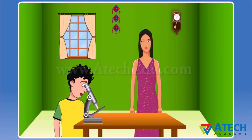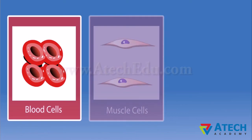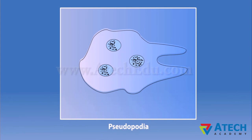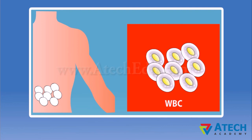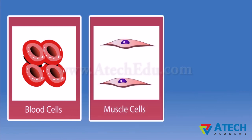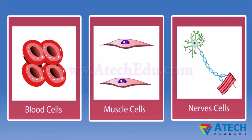Different cells have different shapes. Blood cells, muscle cells, and nerve cells of human beings have specific shapes. But amoeba has no definite shape — it keeps changing its shape. The parts of amoeba protruding out of its body are called pseudopodia. Pseudo means false and podia means feet. These projections appear and disappear as amoeba moves or feeds. A white blood cell, or WBC, in human blood is another example of a single cell which can change its shape.